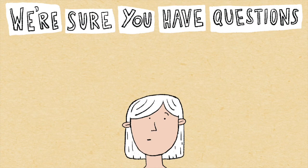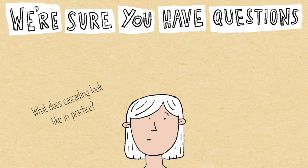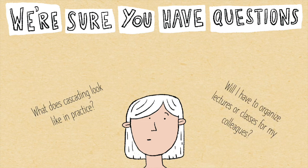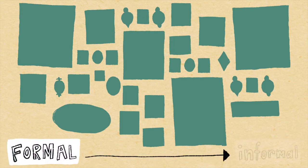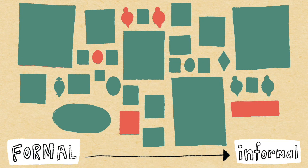We are sure you have many questions about cascading. What does cascading look like in practice? Will I have to organize lectures or classes for my colleagues? I don't have time for this. Cascading can take many shapes and forms. In many ways, it mirrors teacher learning, which can take place in formal to informal contexts. In the weeks to come, we'll take a closer look at various cascading options and help you select the most suitable ones for your teaching environment.